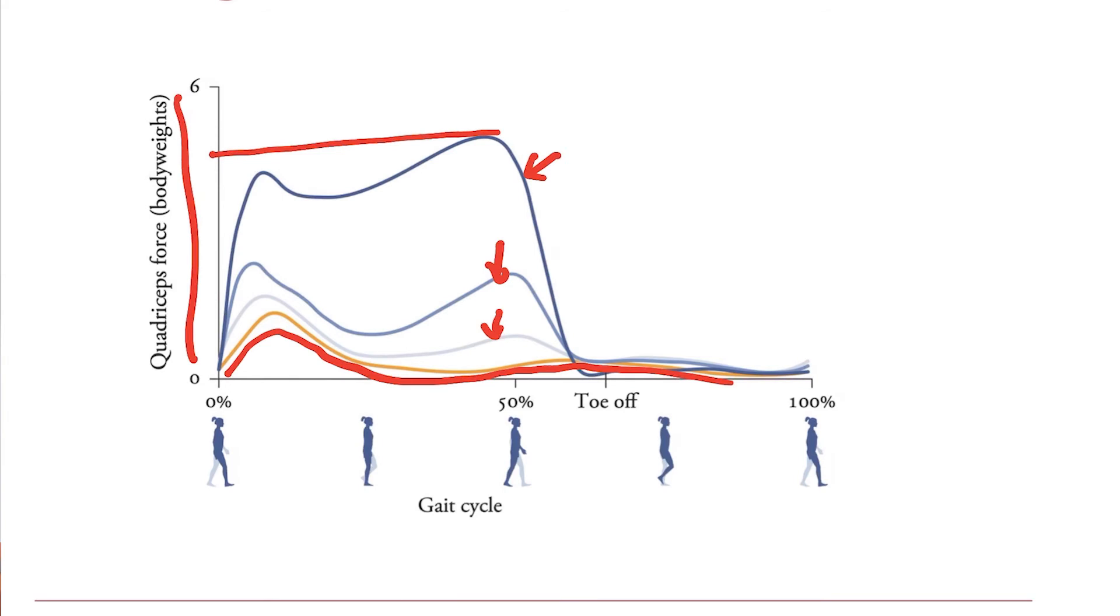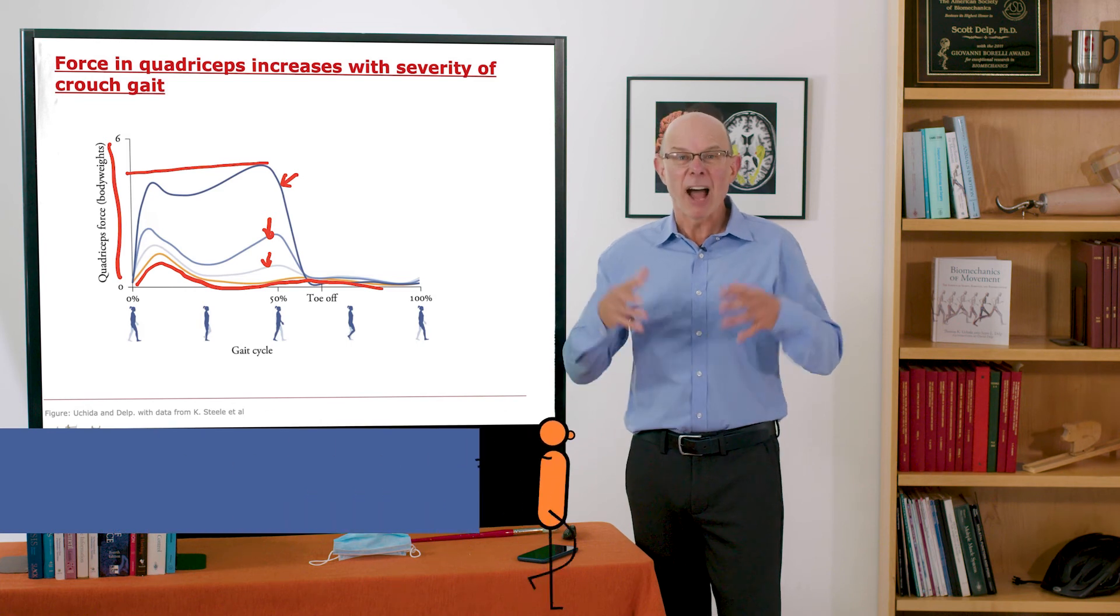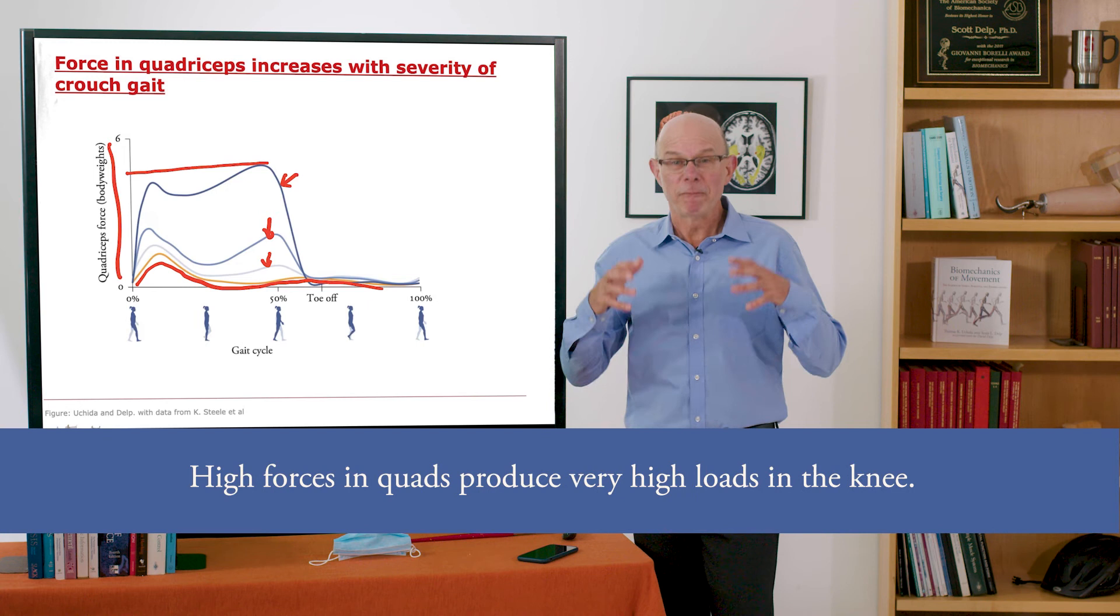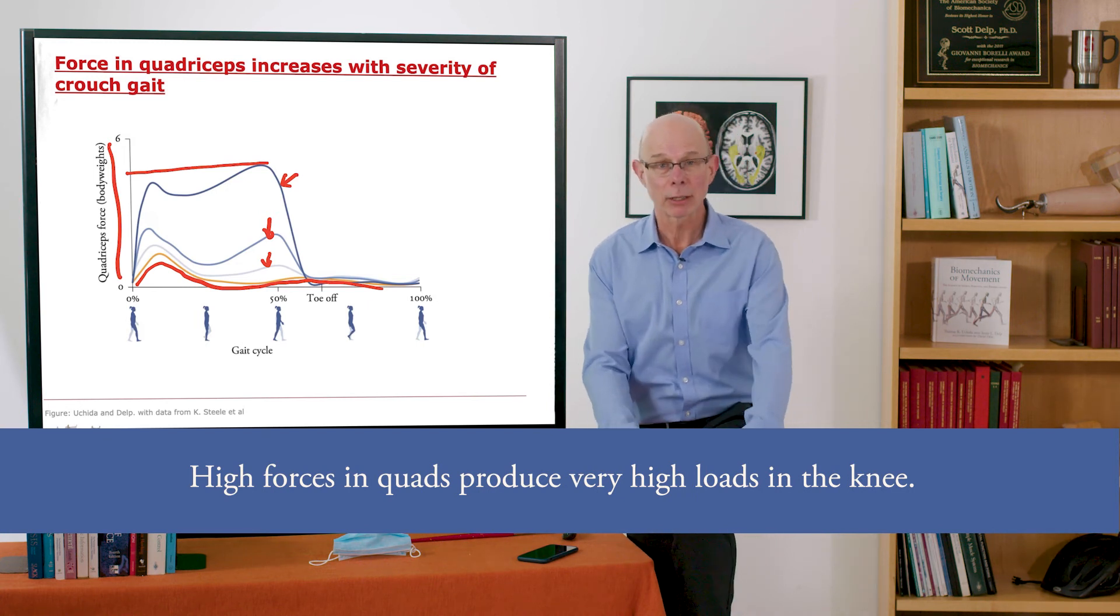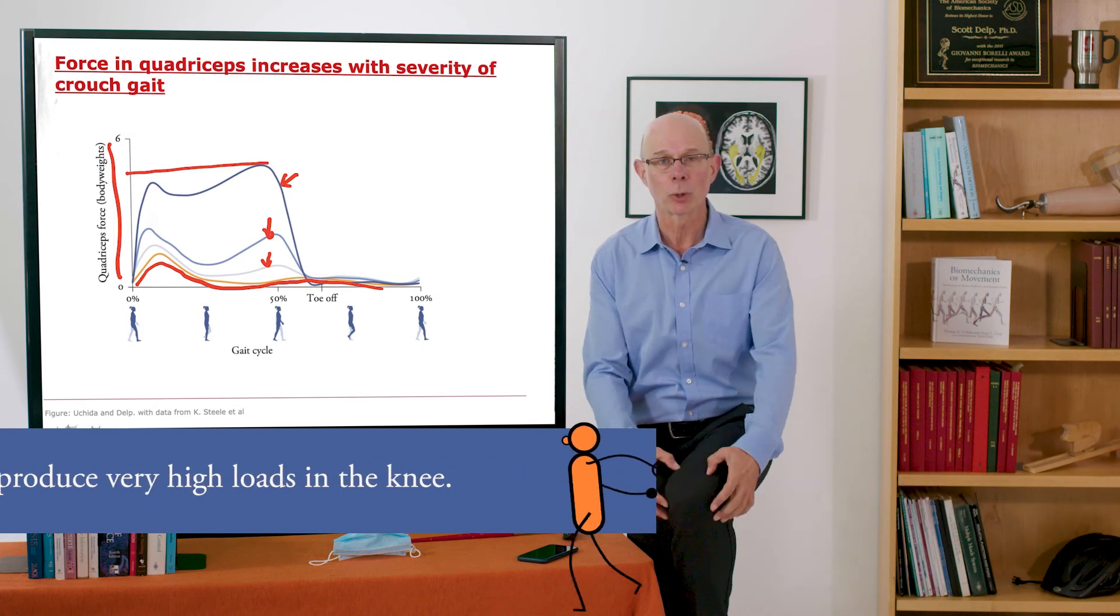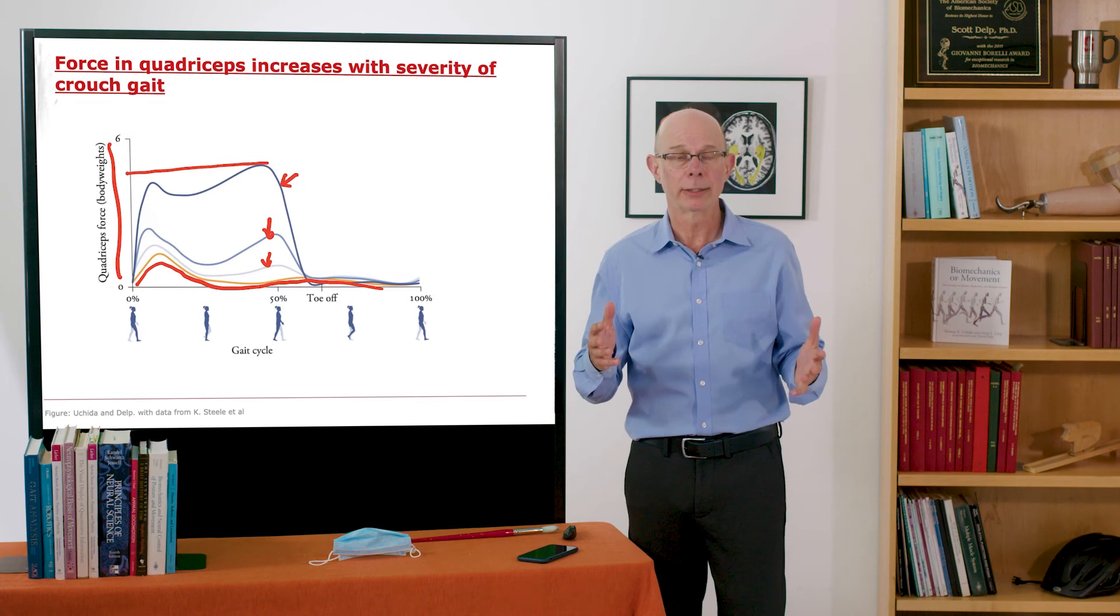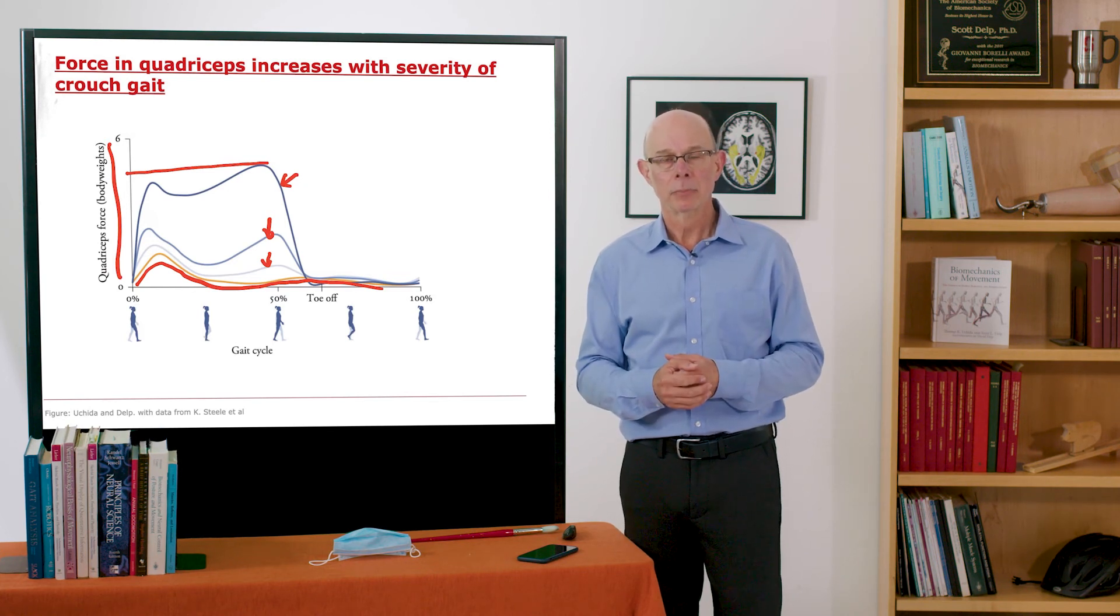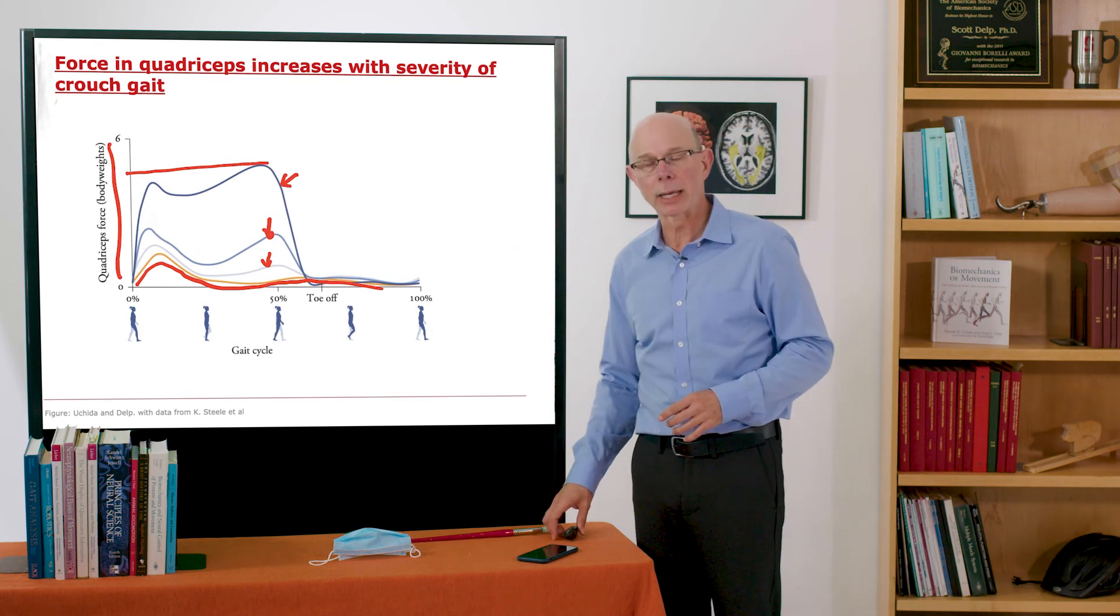So if I weigh 150 pounds, I've got five times that in my quadriceps muscles and those very high forces in my quads are producing very high loads in my knee, in my patellofemoral joint and in my tibiofemoral joint. No wonder individuals with crouch gait get osteoarthritis in their early 20s and have knee pain in their teens. That makes clear because we can compute these things that we just can't get from experimental data.